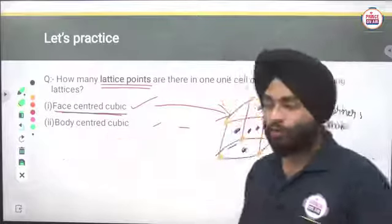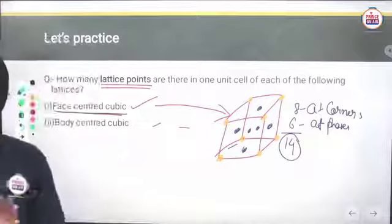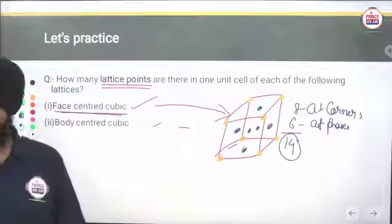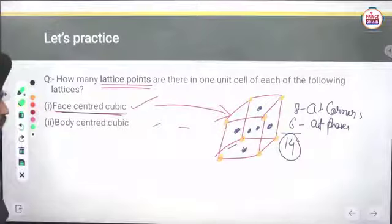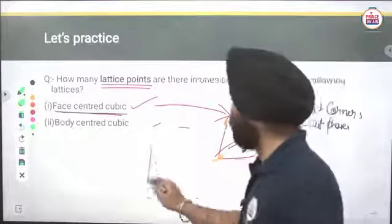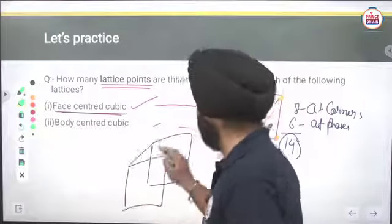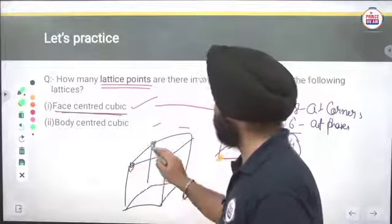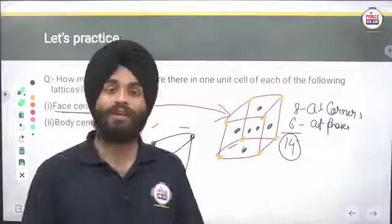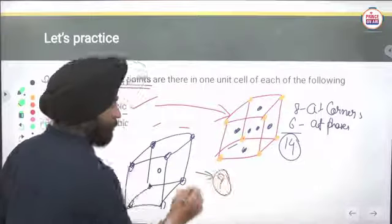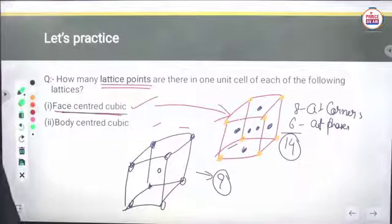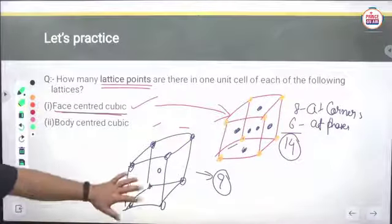For body centered cubic: particles are at 8 corners and 1 at the center of the body. Total lattice points = 8 + 1 = 9.